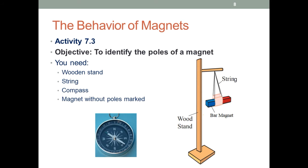Then hang the magnet with the help of the string and the wooden stand as shown in the diagram. Now let the magnet become still. You will observe that the magnet lies still aligned between north and south.